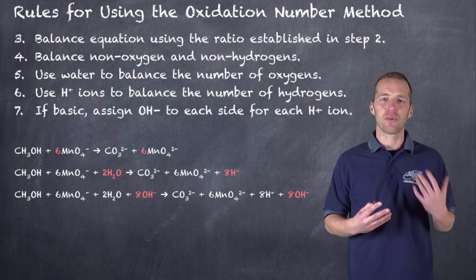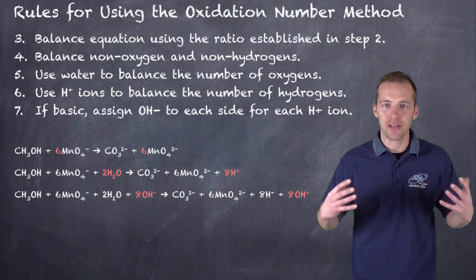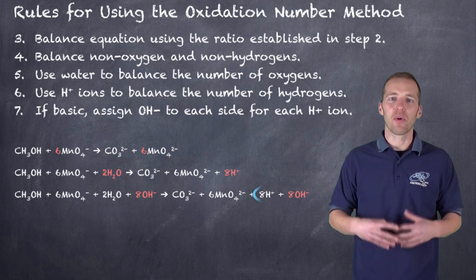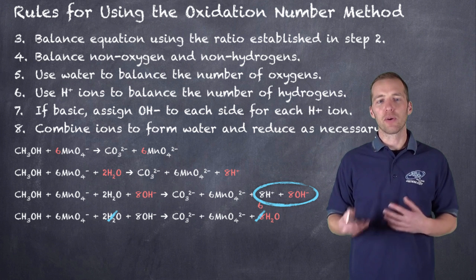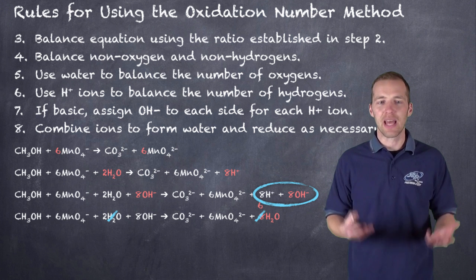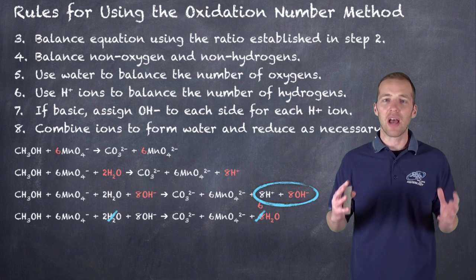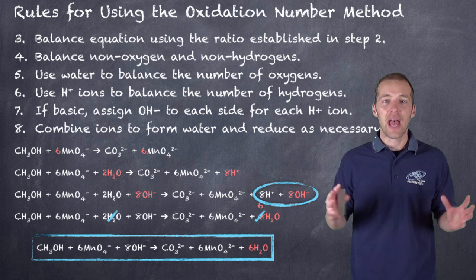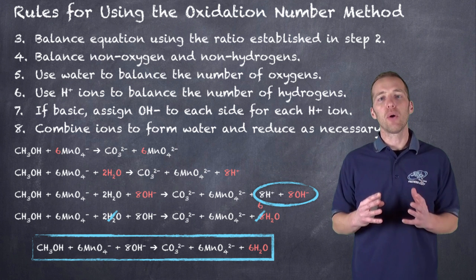We can't just put hydroxide on one side, because that would throw the equation out of balance in terms of oxygen and hydrogen. Whatever number of hydroxide we put on one side must go on the other side as well. When we combine the hydroxides and hydrogen ions — in this case on the product side — the eight hydrogen ions and eight hydroxide ions combine to form eight water molecules. Since we now have water on both sides, we reduce: eight minus two gives us six water on the product side.